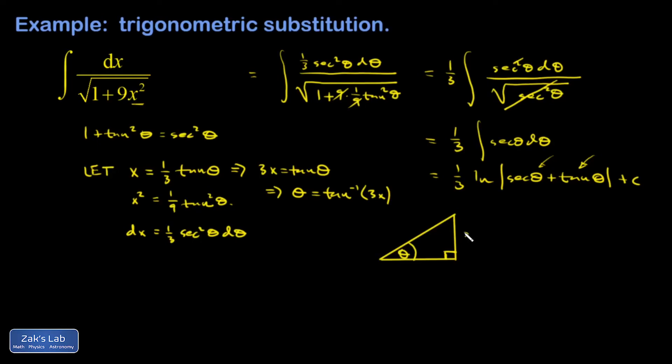That's the angle whose tangent is 3X. The easiest way to do that is to make that opposite side 3X and the adjacent side 1, and then if I apply the Pythagorean theorem I can get the hypotenuse. So 1 squared plus 3X quantity squared is equal to this hypotenuse squared, so this must be the square root of 1 plus 9X squared.